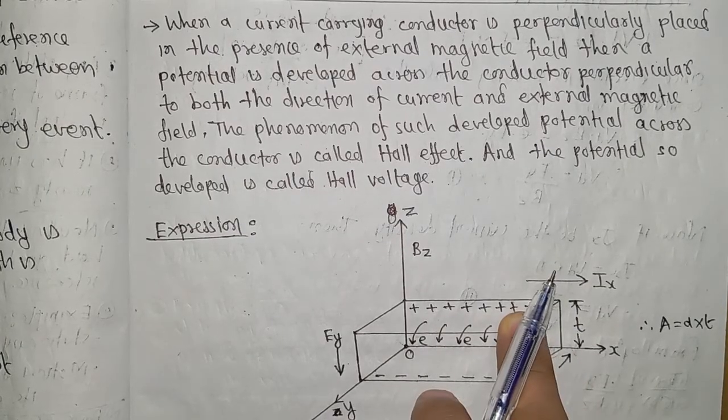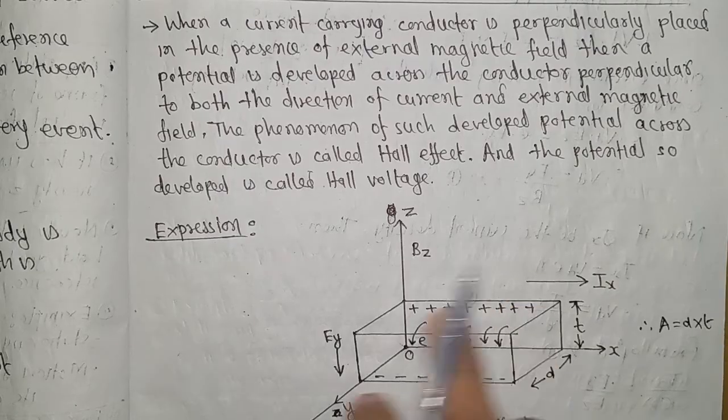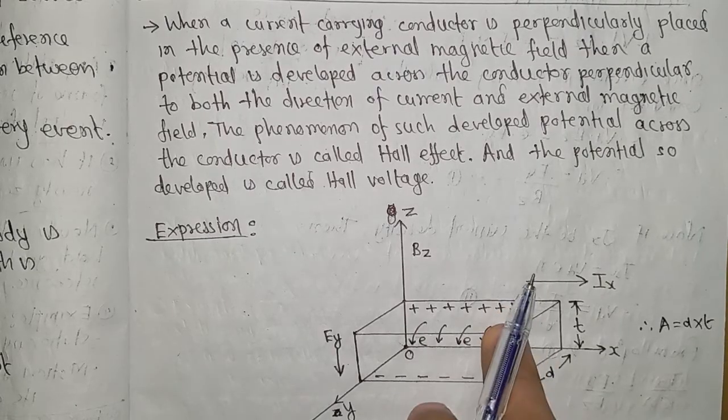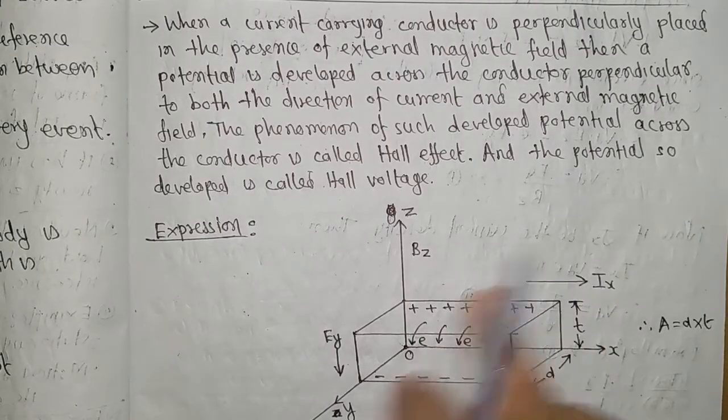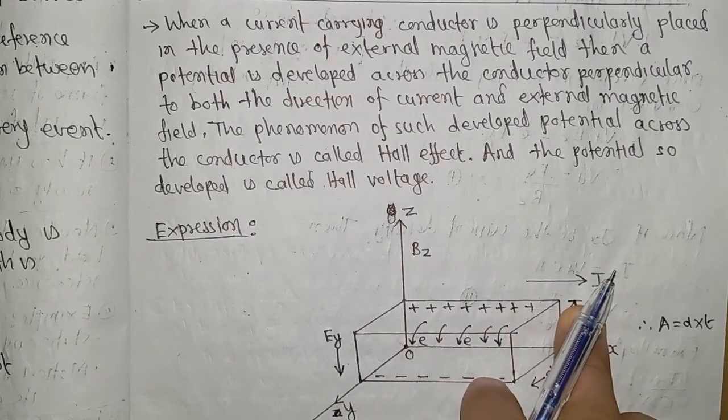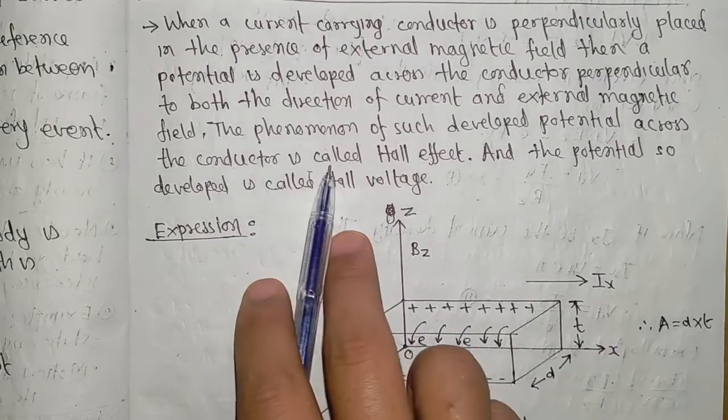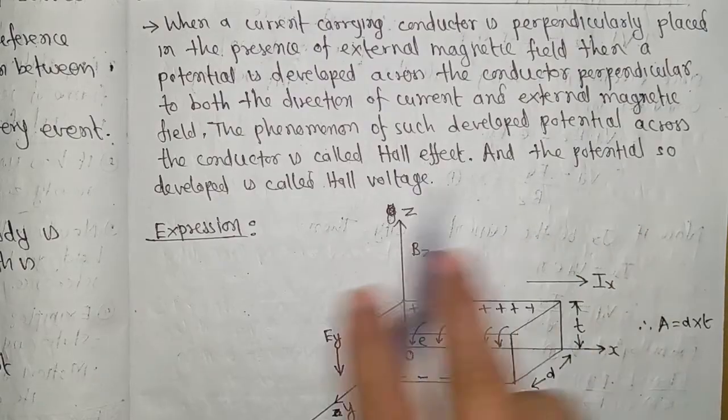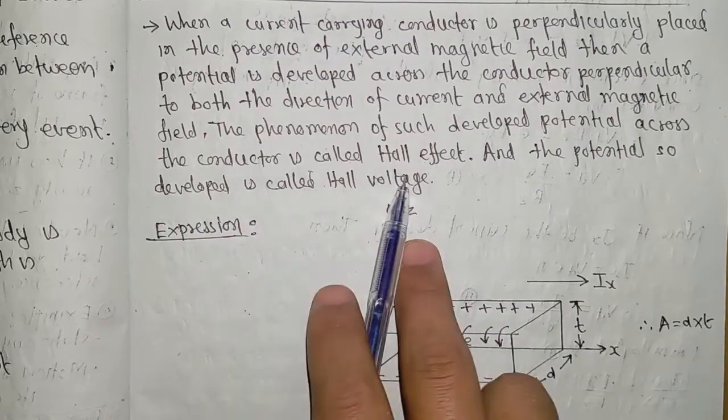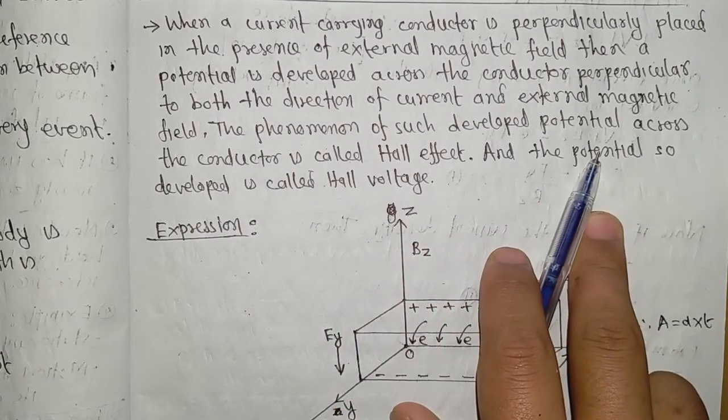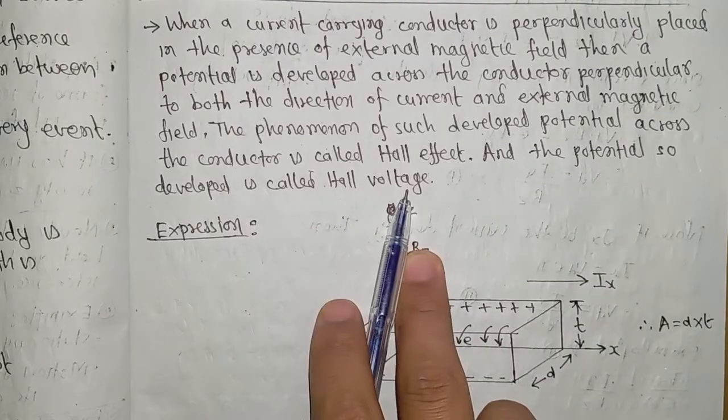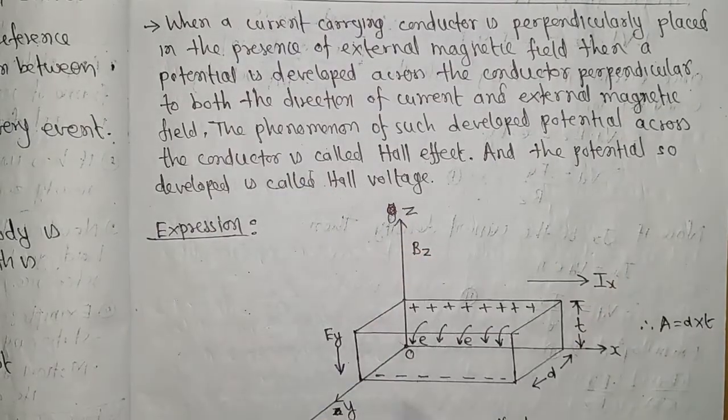When potential develops due to both the current and the magnetic field, this phenomenon is called Hall Effect. The potential so developed is called Hall voltage. That's the basic definition you need to know.